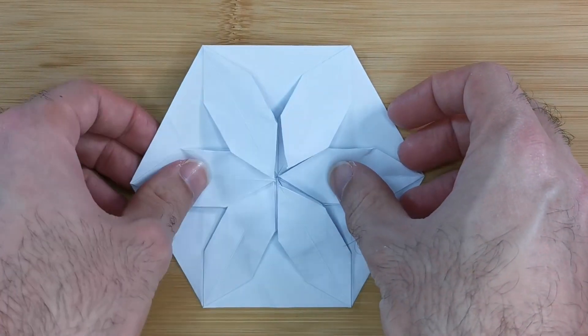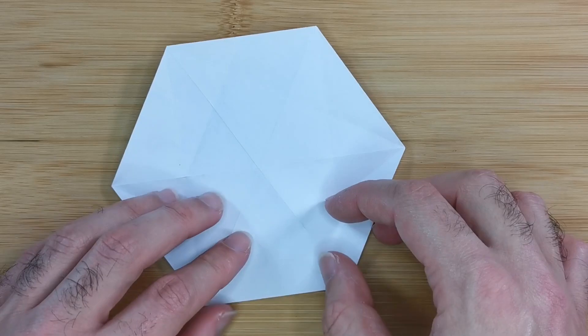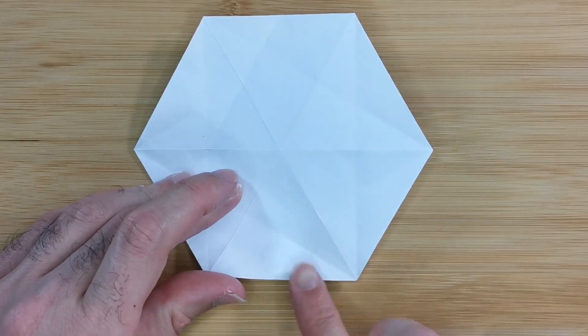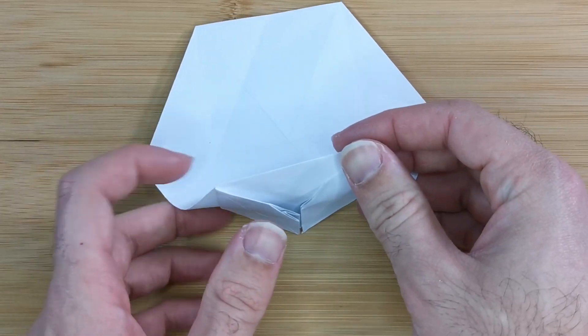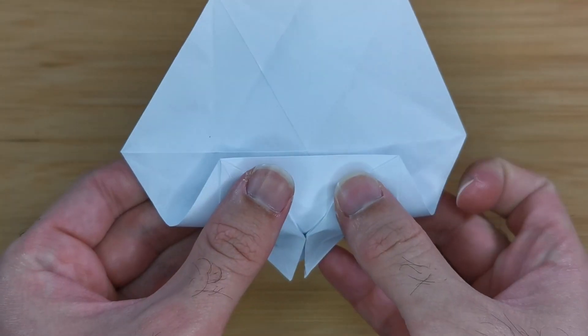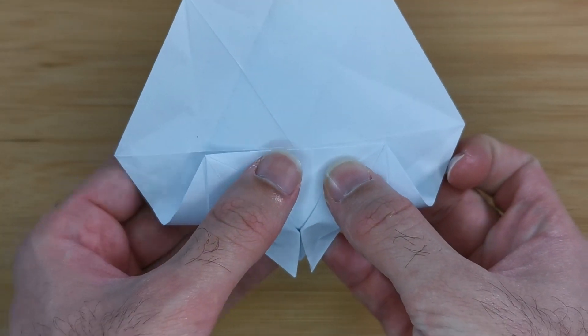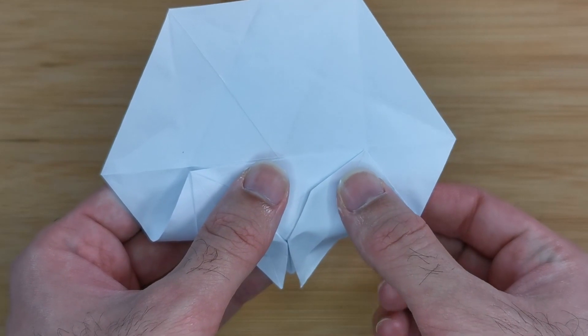Flip the model over and we're going to fold the bottom edge to the central crease. But we don't want to make any creases through the branches. So just pinch at either end.